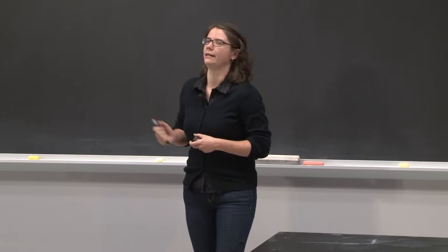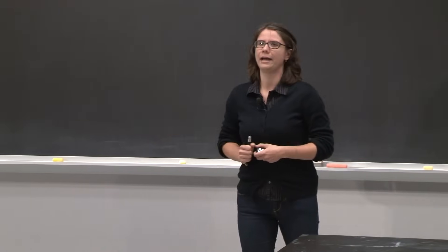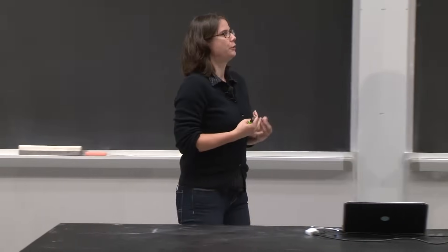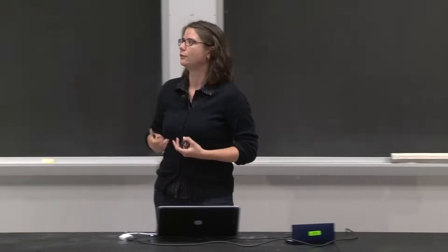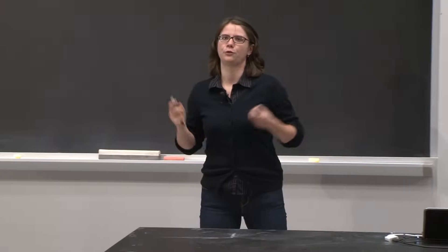This object is being bound to a variable named 'hi' using the equal sign, which is the assignment operator. From now on, whenever we refer to the variable 'hi', Python will know its value is that string of characters. We're going to learn about two operations on strings today. One is to concatenate them — concatenation is just a fancy word for using the plus operator, which means put the strings together. I have a variable 'hi' and a new variable 'name', and when I use the plus operator between them, Python puts their values together.